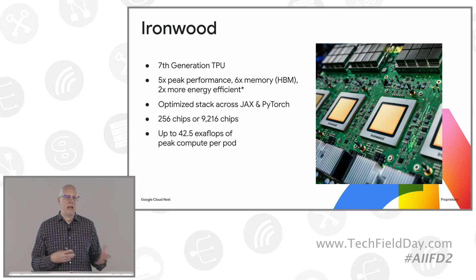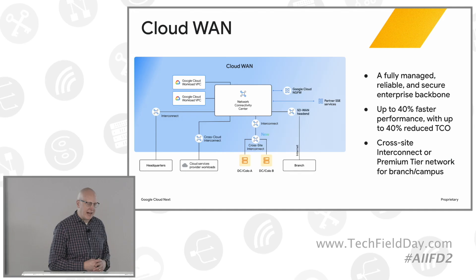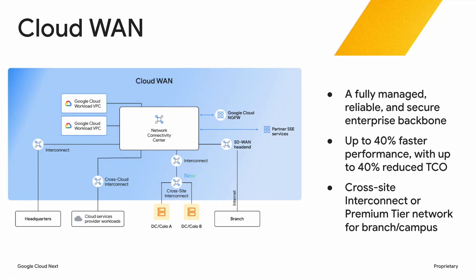On the networking side, we want to continue making it easy for customers to leverage the network running in Google Cloud. One advantage for us is that we actually own our entire network infrastructure — we have thousands of miles of undersea cables, and we continue to expand as we grow to 41 regions. Cloud WAN is a new way for customers to leverage not only their access within Google Cloud, but also their own private access within their company. It's a fully managed service that allows greater capability of improving performance up to 40%. You'll hear more about Cloud WAN later today, covering our cross-cloud network and interconnect capabilities, undersea cables, and the entire network infrastructure Google owns to deliver consistent latency for AI workloads and traditional enterprise workloads.